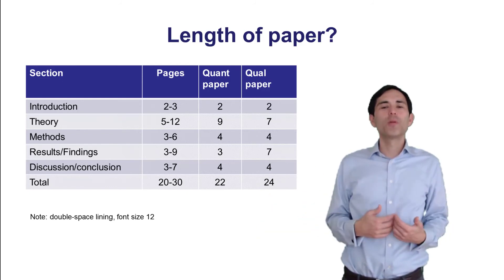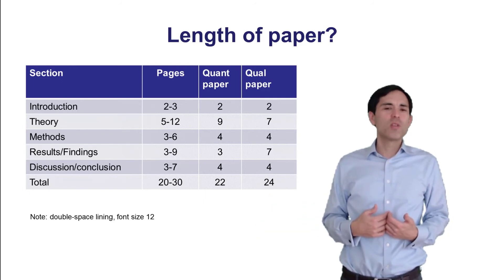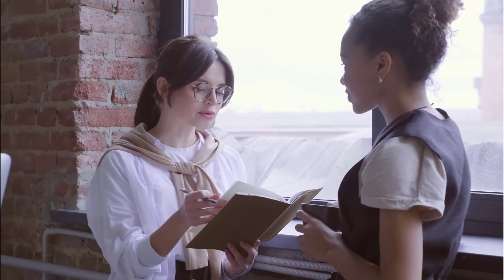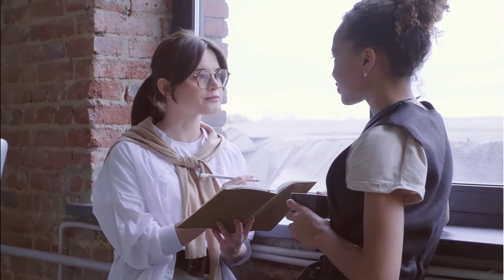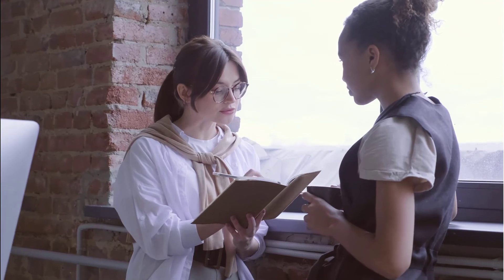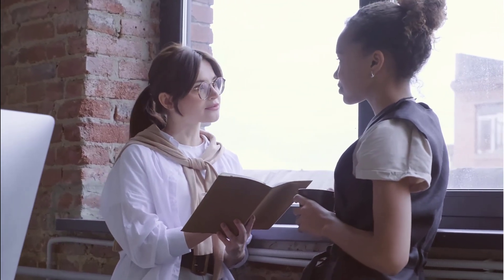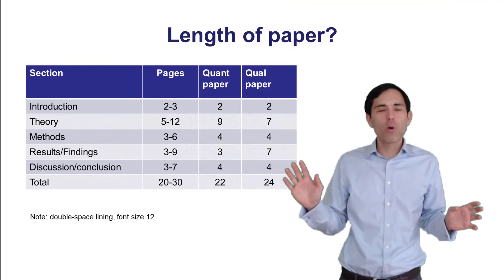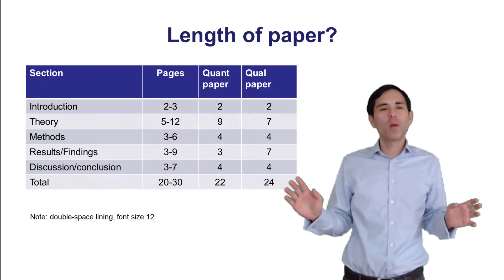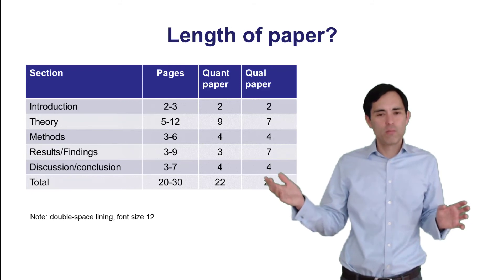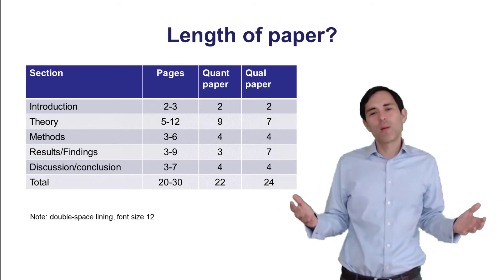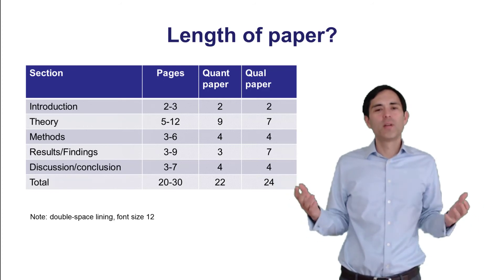Then, what follows would be the methods. Here, I don't see much reason why a quantitative or qualitative paper should be shorter or longer. One common wrong assumption is, oh, qualitative papers are super easy. There's no methods involved. I just interview some people, do this and that, and that would be sufficient. No, it's not. It's very important there also to explain and justify your methods. So here, I would say in both cases, maybe just, for example, four pages.